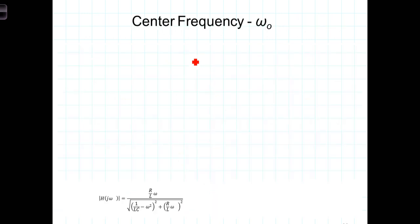Now, it turns out that omega-0 is equal to what is known as the geometric mean of the cutoff frequencies. Let me go ahead and write it here, and then we'll talk about it.